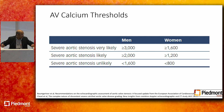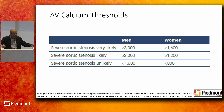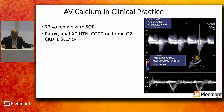The data is based on trileaflet CTs. Bicuspid valves degenerate faster. The majority of the multicenter observational data — including the original Serrano paper — is based on trileaflet CTs.